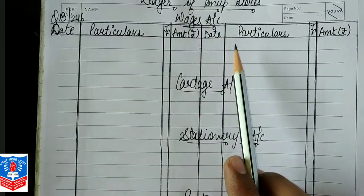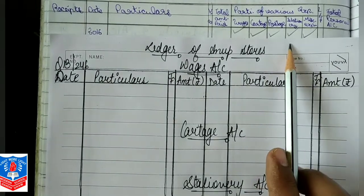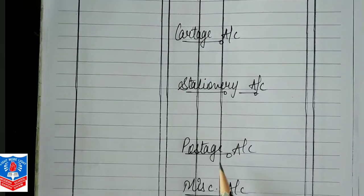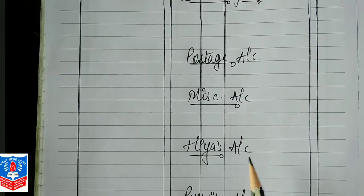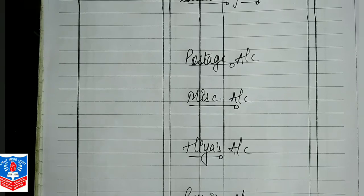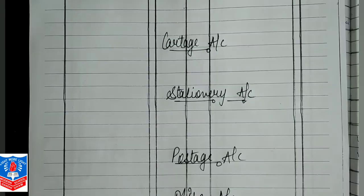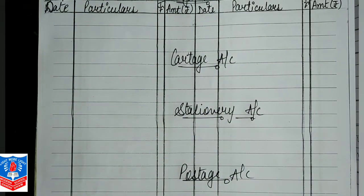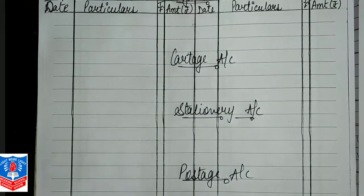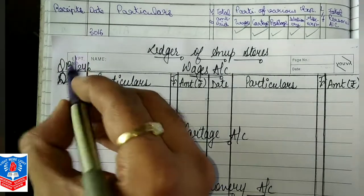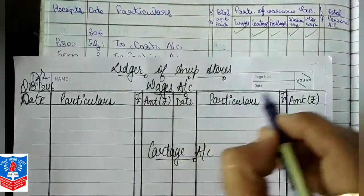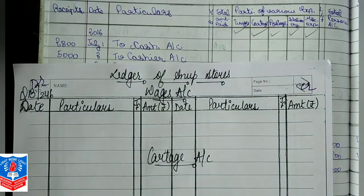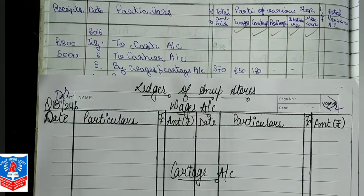As I told you, I've done tick marking — 5 expense accounts will be here: wages, cartridge, stationery, postage, miscellaneous, and two personal accounts, Hia and Purvi. Being all these expenses, their nature is debit. So all the postings will be on the debit side. We will write down the date, that is 2016, July. Note that cash and cashier column posting is not done here; we prepare the expense columns and do the ledger posting from there.